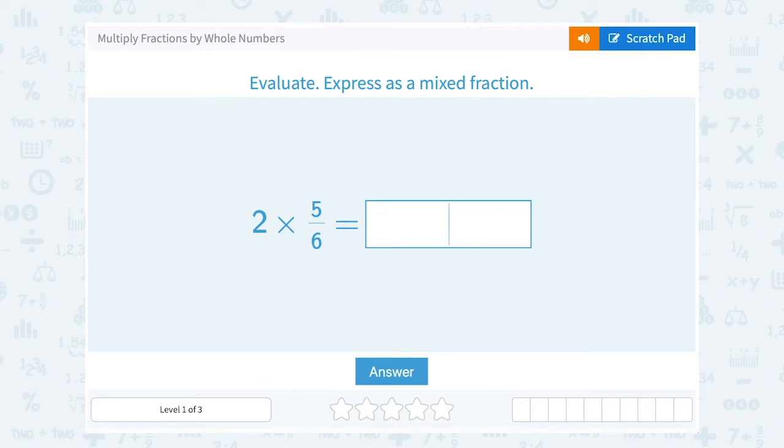Let's take a look at how to multiply fractions by whole numbers. Evaluate and express as a mixed fraction. Our question is 2 times 5 over 6.